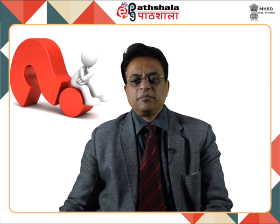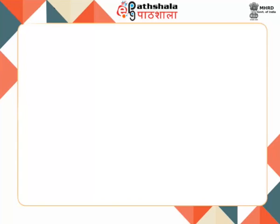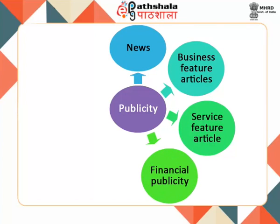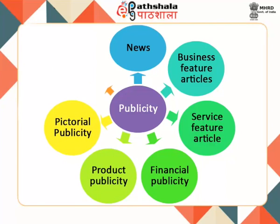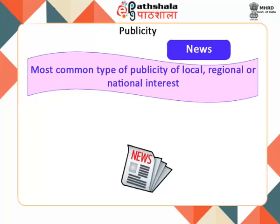According to the Handbook of Journalism and Mass Communication, publicity can be broadly categorized into seven types: News, Business Feature Articles, Service Feature Articles, Financial Publicity, Product Publicity, Pictorial Publicity, and Emergency Publicity. The most common type of publicity is news of local, regional or national interest, with two subtypes: spontaneous news and planned news.